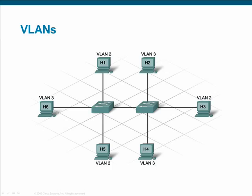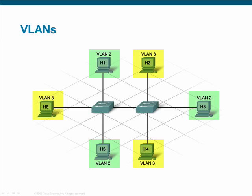A VLAN allows a network administrator to create logical groups of network devices that act as if they are on their own independent network, even if they share a common infrastructure with other VLANs. This means that a networker can logically configure a single, physical switch to act as if it is multiple and separate logical switches. Moreover, multiple switches configured with similar VLANs can be interconnected, and devices on the same VLAN can communicate with each other across those switches.